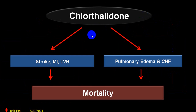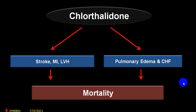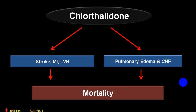Because of decreasing stroke, MI, and LVH, mortality is reduced. It also improves pulmonary edema and congestive heart failure, further reducing mortality. These are additional benefits apart from the primary benefits of chlorthalidone.